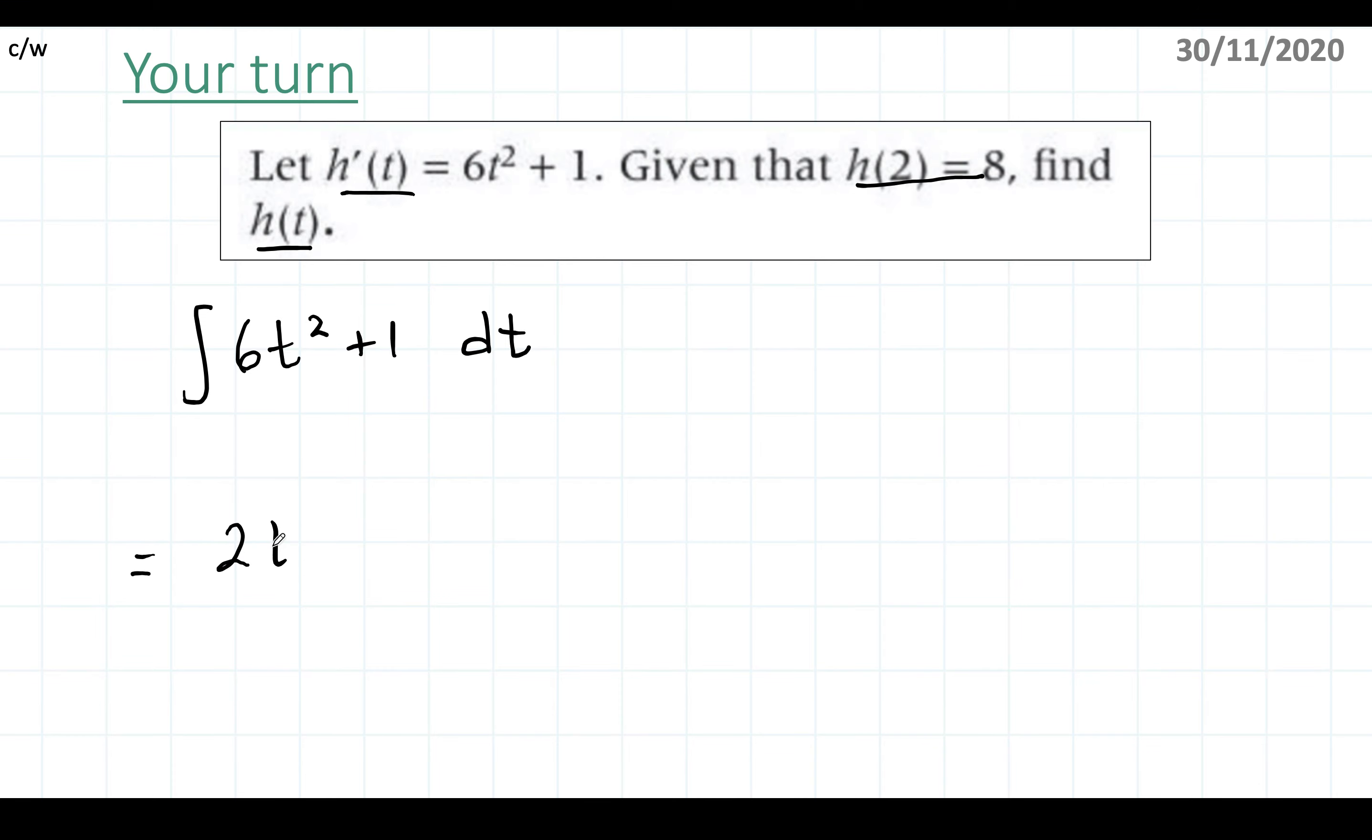So this is going to be 2t cubed plus t plus c. You can again see that if I turn it to 6t squared, I add the power, I'm going to end up dividing by 3, which will cancel out with 6. And if you derive, you need to make sure you get back to the integral.